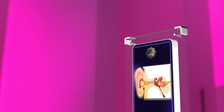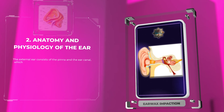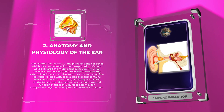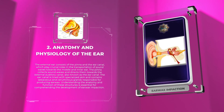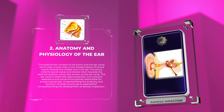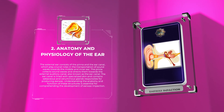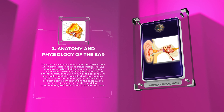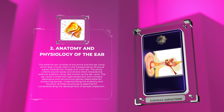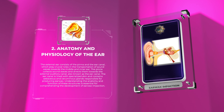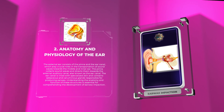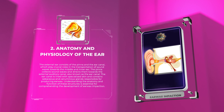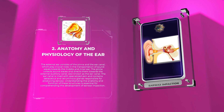The external ear consists of the pinna and the ear canal, which play crucial roles in the transportation of sound waves towards the middle and inner ear. The pinna collects sound waves and directs them towards the external auditory canal. The ear canal is lined with specialized skin and contains sebaceous and ceruminous glands responsible for producing earwax.